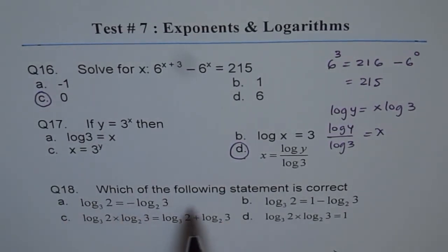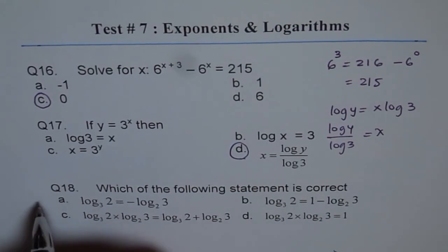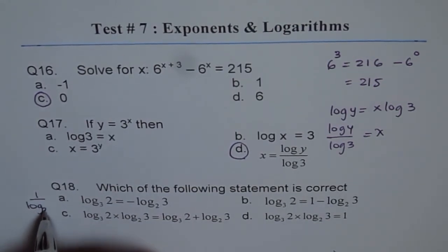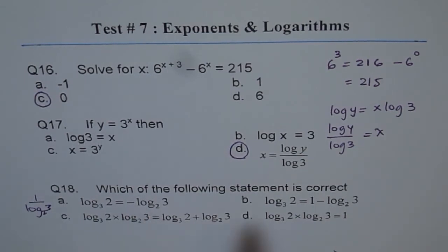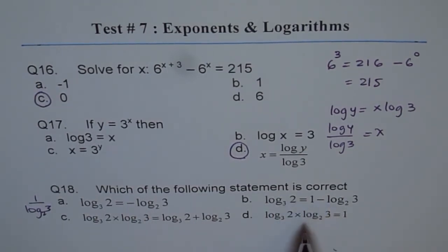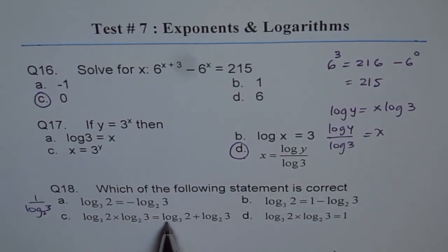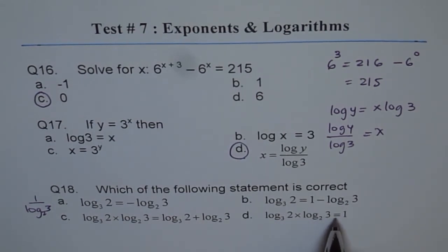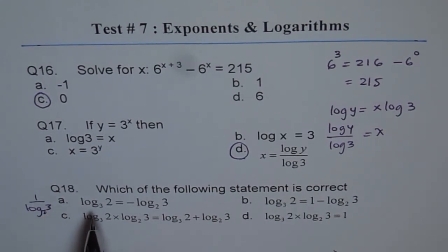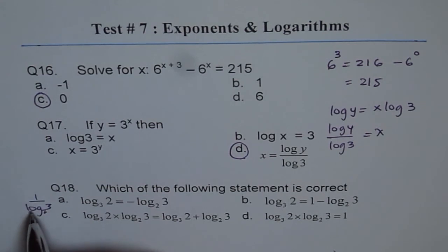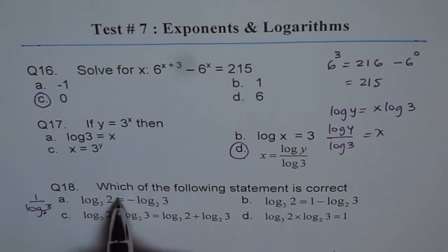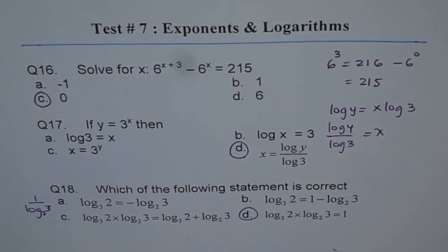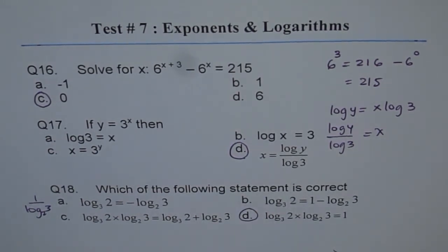Question 18: Which statement is correct? Log base 3 of 2 is not equal to negative log base 2 of 3 — that's wrong. Log base 3 of 2 equals 1 over log base 2 of 3 — not 1 minus. The option saying they multiply to give their sum is also wrong; you'd need the same base. But log base 3 of 2 times log base 2 of 3 equals 1 is correct — because log base 3 of 2 equals 1 over log base 2 of 3, and cross-multiplying gives the product equals 1. So option D is correct.